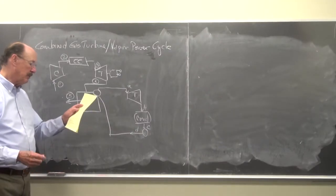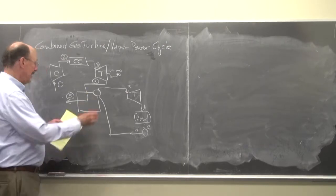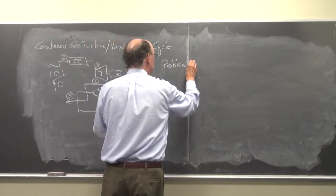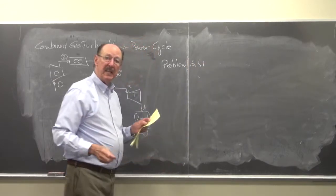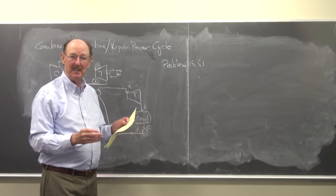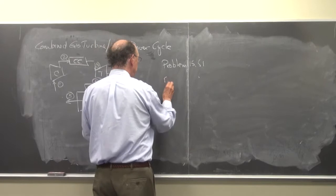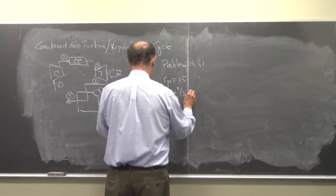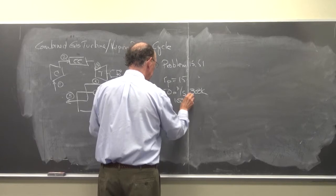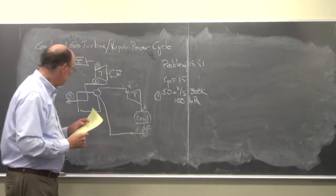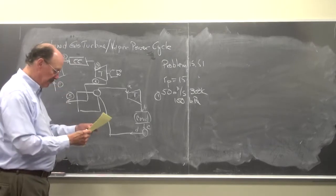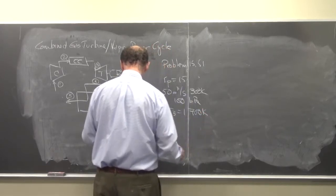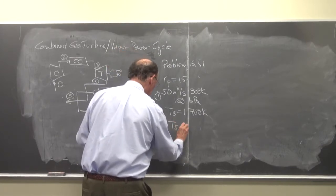What I'm looking at here is problem 15.51. So I have this cycle going on. In this case you may want to stop and get problem 15.51 and see what it says. Here we're given Rcp is equal to 15. We're given 50 cubic meters per second, 300K, 100 kPa. So this is state one, what's going into the gas turbine. We're told that T3 is 1700K and that T5 is 450K.